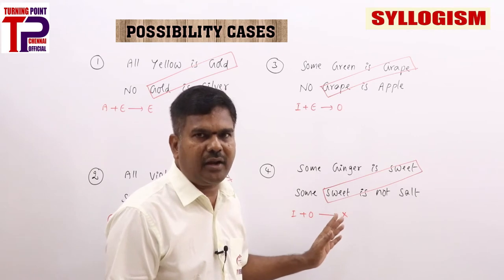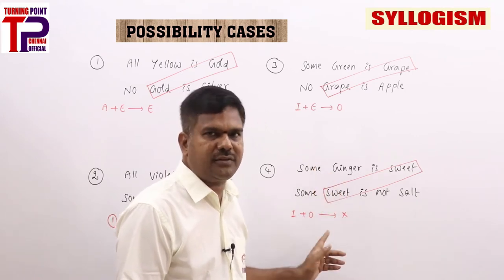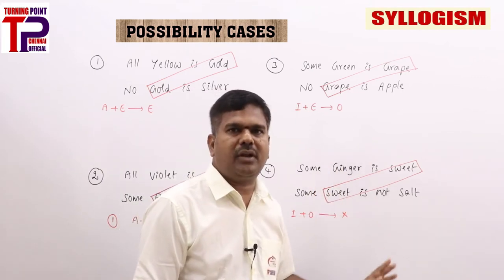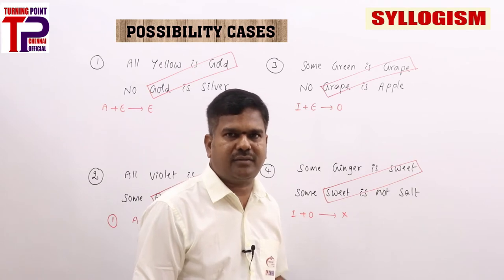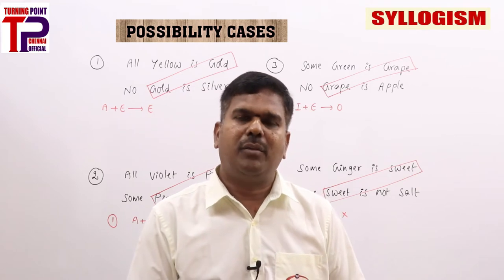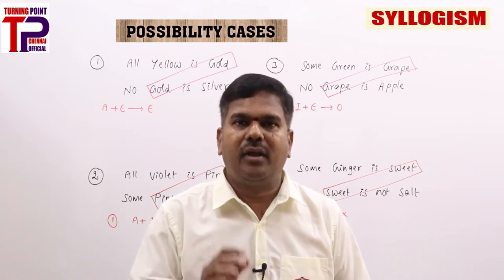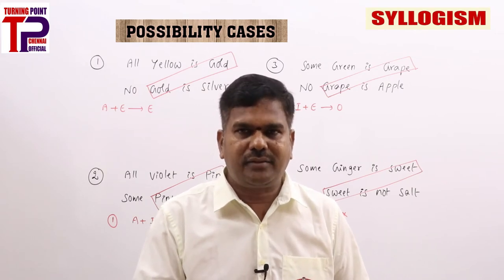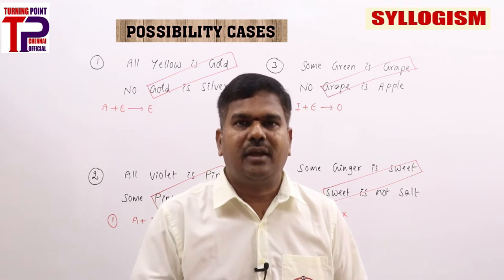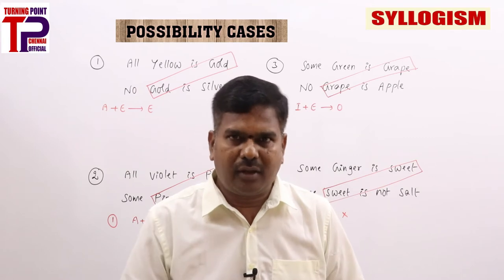Apart from this, I plus O gives no conclusion but it has been properly aligned, so all possibilities come into picture relating to ginger and salt. All possibilities are right. Whenever statements don't fall under the six rules, whatever the combination — if properly aligned, all possibilities come into picture. Remember: from statements, when taking immediate inferences, we should not consider possibility cases.